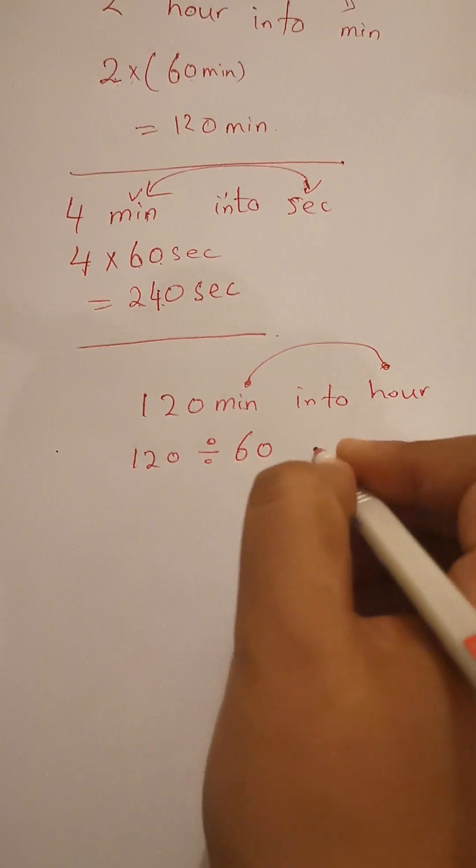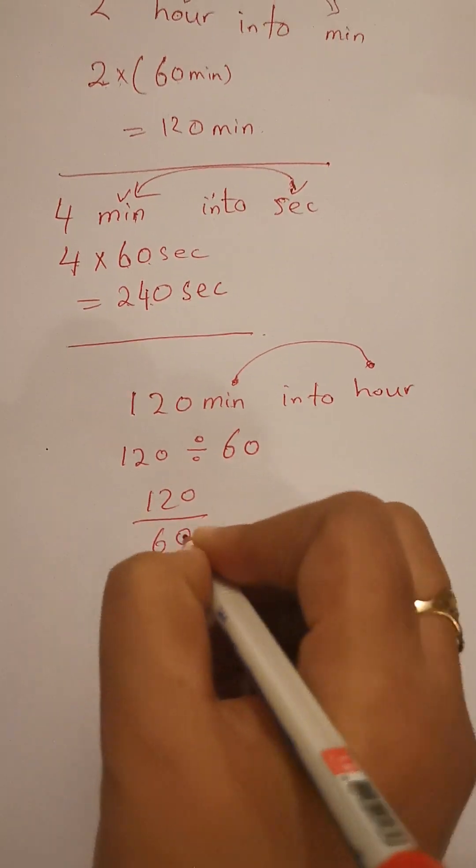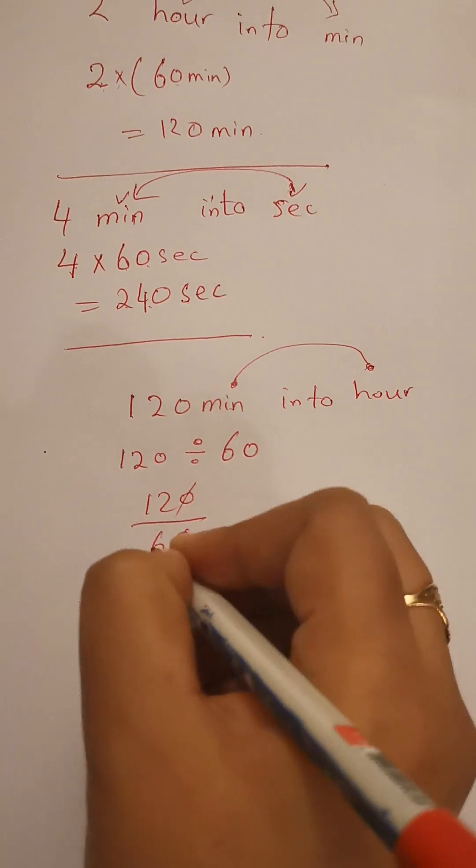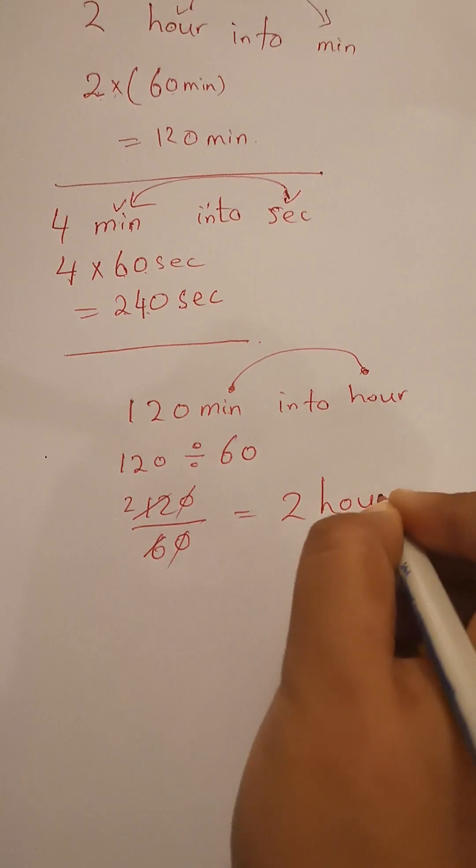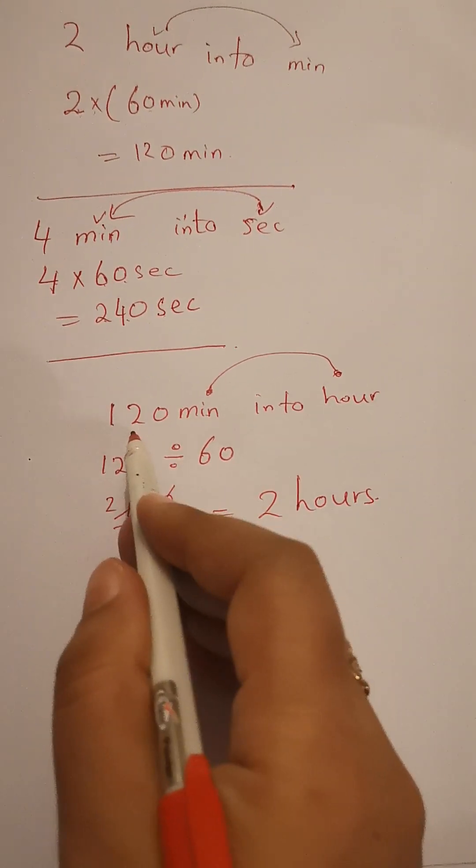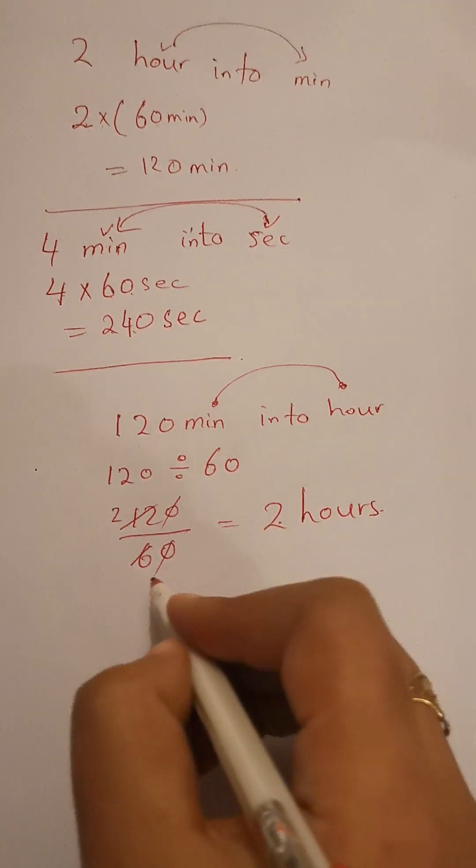Zero cancels with zero, 6 once is 6, 6 twice is 12. So 2 hours. In 120 minutes you have 2 hours.